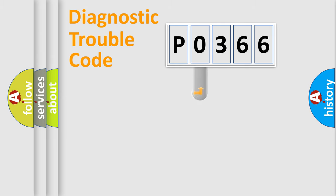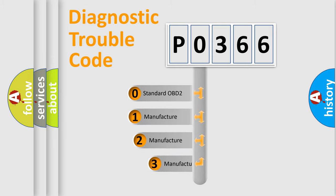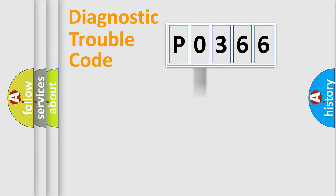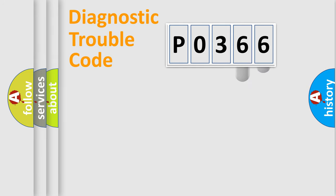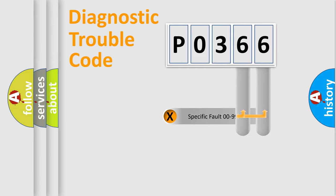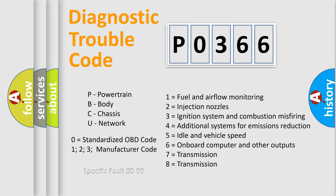This distribution is defined in the first character of the code. If the second character is expressed as zero, it is a standardized error. In the case of numbers 1, 2, or 3, it is a manufacturer-specific error. The third character specifies a subset of errors. This distribution is valid only for the standardized DTC code, and only the last two characters define the specific fault of the group. This division is valid only if the second character is expressed by the number zero.